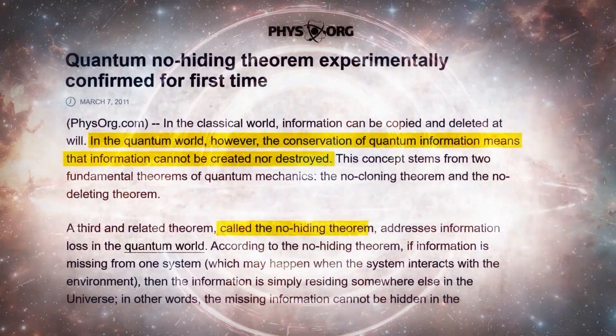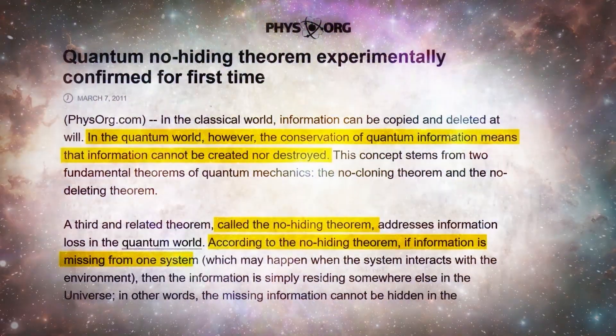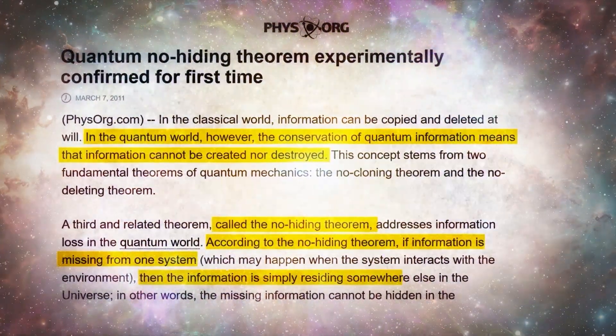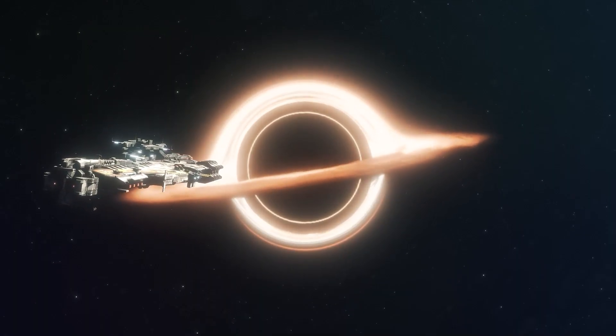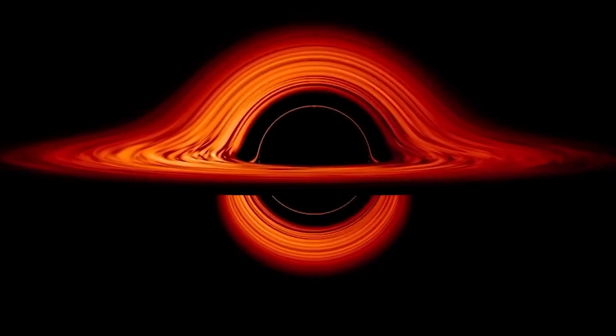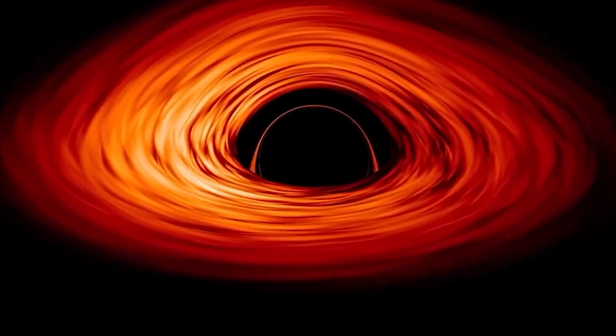This means that even if any information were to disappear from a system, it would still exist somewhere else in the universe. In theory, if all of this matter and information is being sucked into the black hole, it will be spat out after the black hole dies, and this is most likely happening through the white hole.